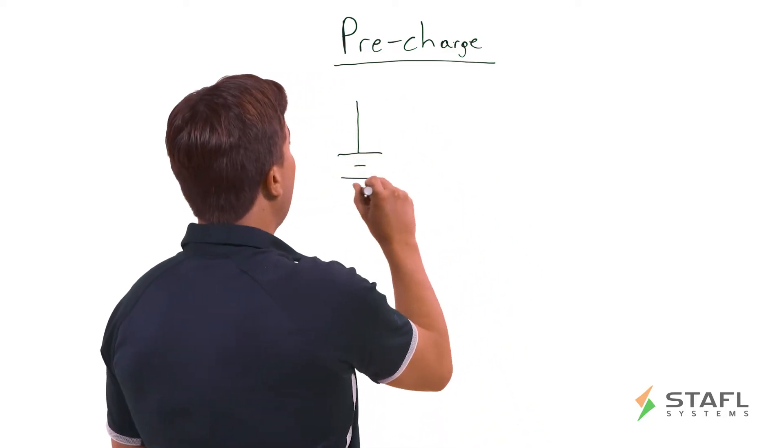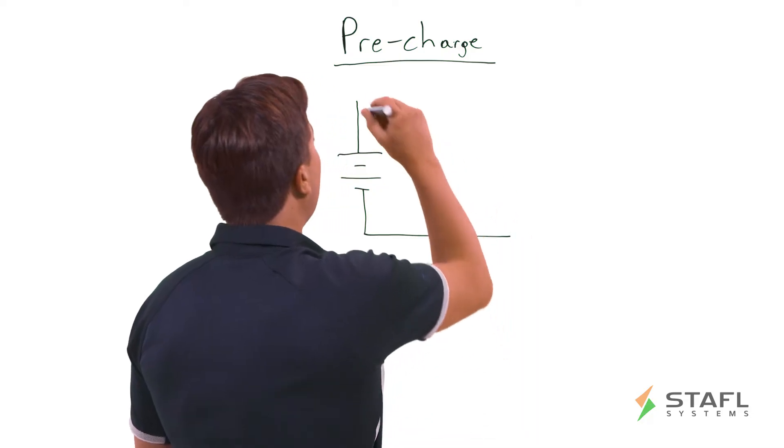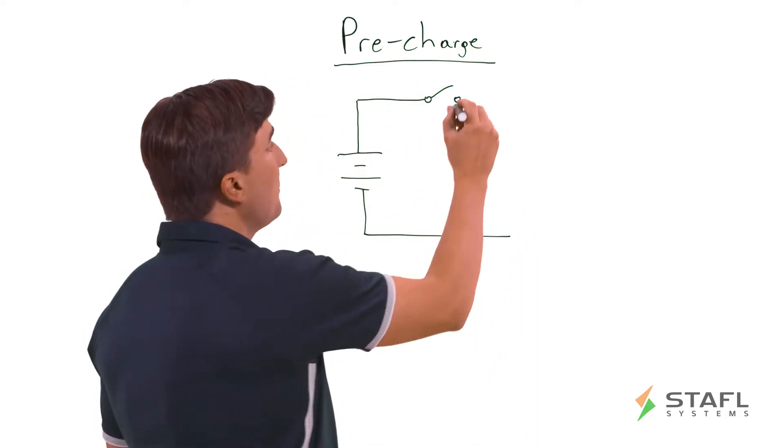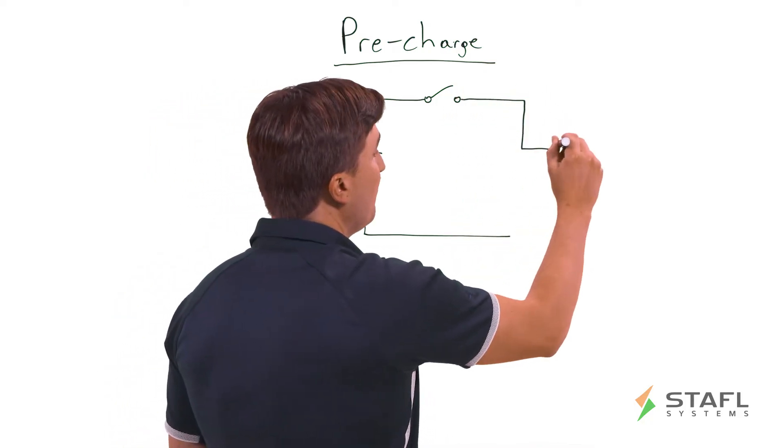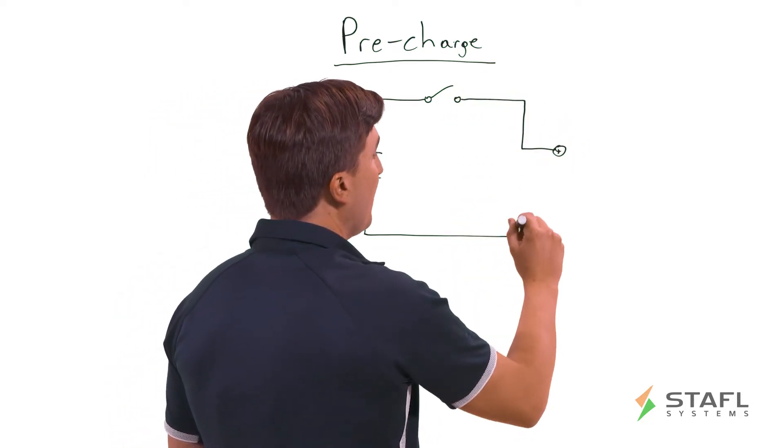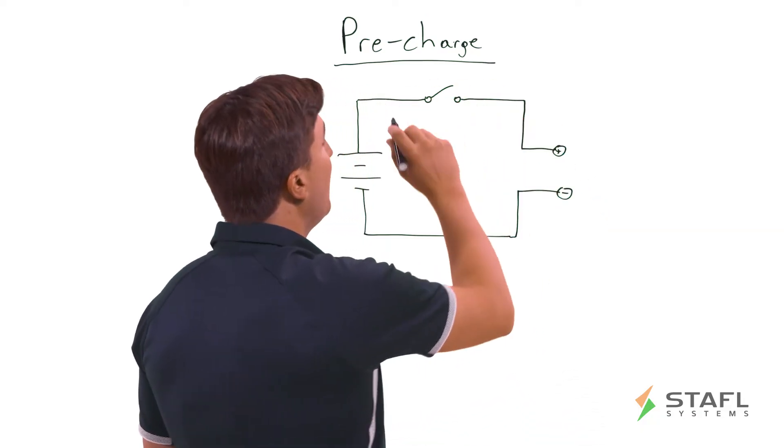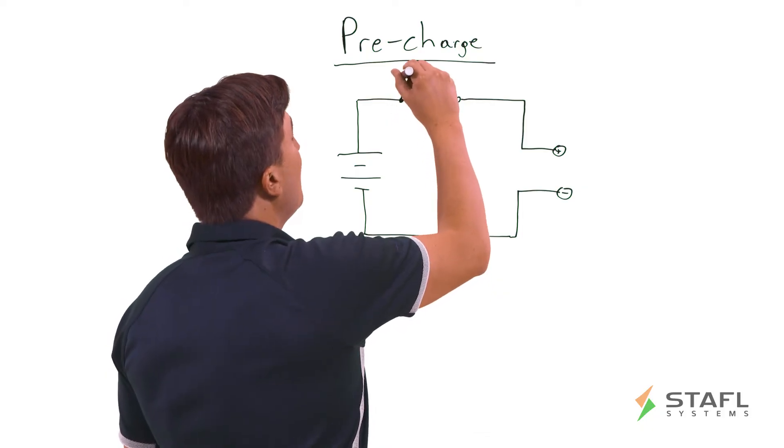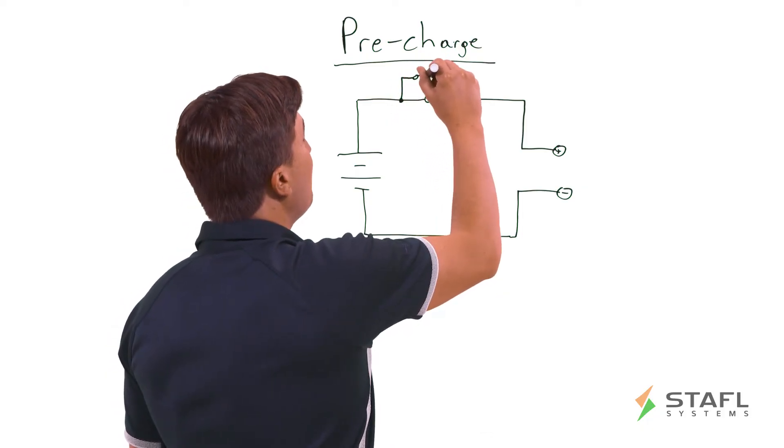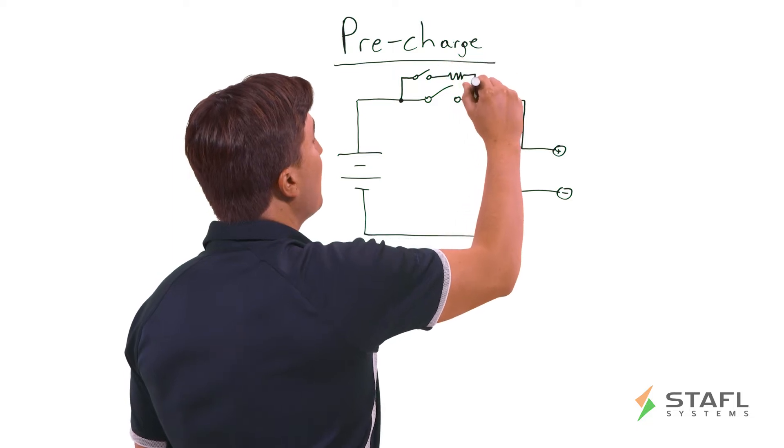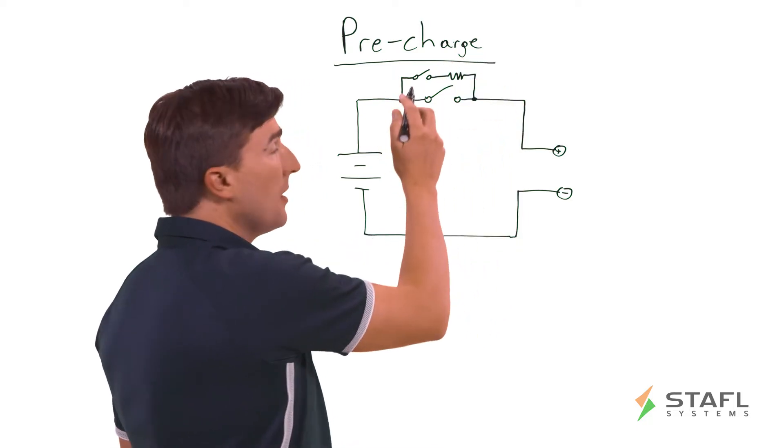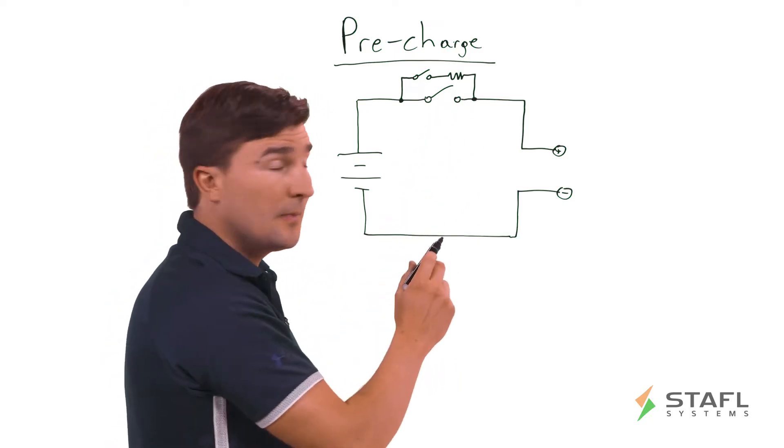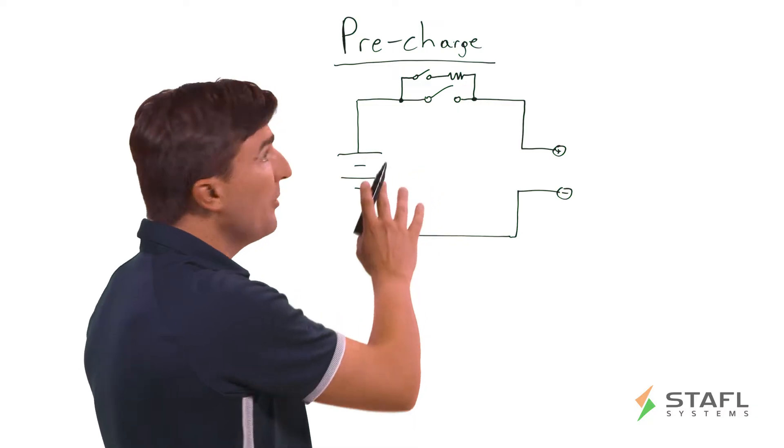So a simplified schematic of a high voltage lithium-ion battery pack consists of a stack of cells, a main disconnect switch, and external terminals. Where does the pre-charge circuit live? It lives in parallel with the main disconnect switch and fundamentally it consists of a smaller disconnect switch and a resistor. Sometimes a fuse as well, but I have omitted that for simplicity.